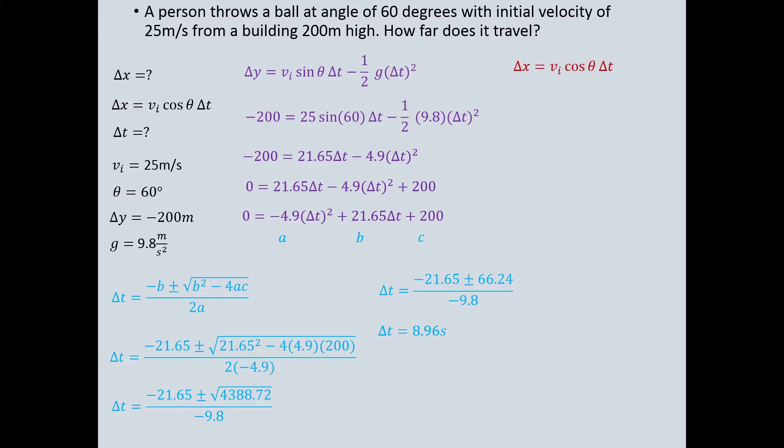With the new calculated time, we can finally solve for how far the ball travels. Delta x equals 25 cosine of 60 times 8.96. Our final answer is positive 112 meters.